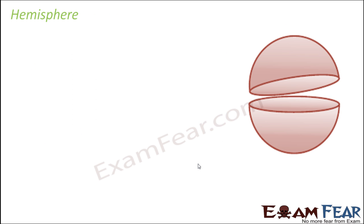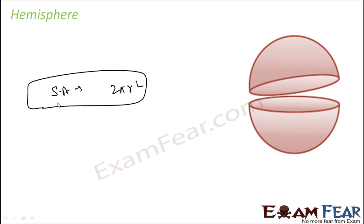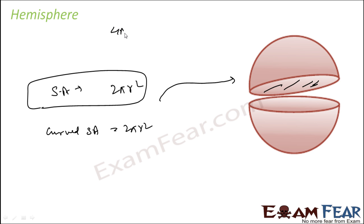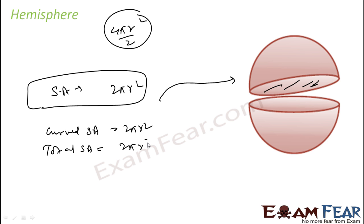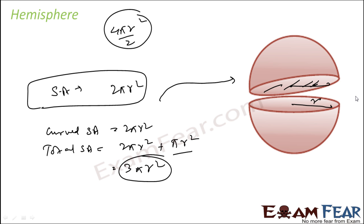The next topic after the sphere is hemisphere. When you divide the sphere into two parts, what you get is a hemisphere. Since the surface area of the sphere was 4πr², the curved surface area of a hemisphere is 2πr². In the case of a sphere there is no base, but for a hemisphere we have a base as well. The total surface area includes the curved surface area 2πr² plus the base which is πr², giving a total surface area of 3πr².